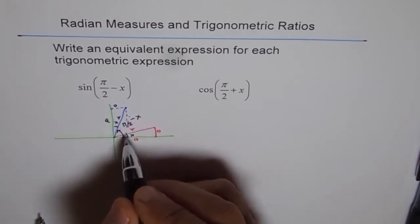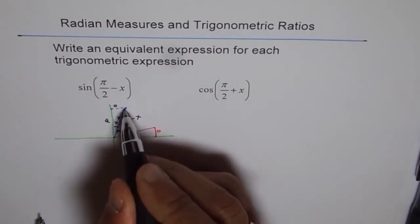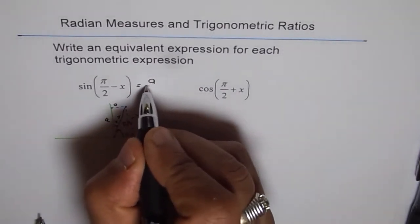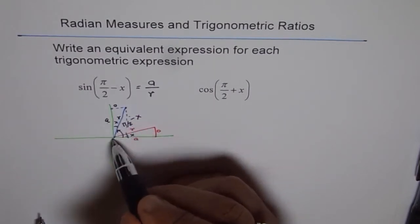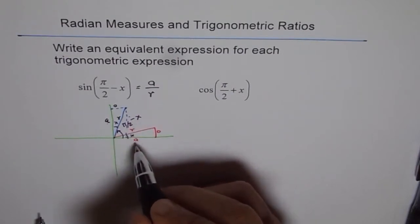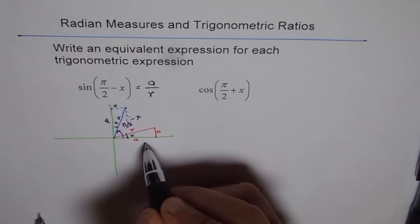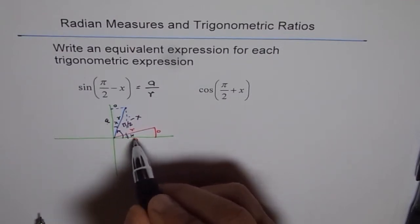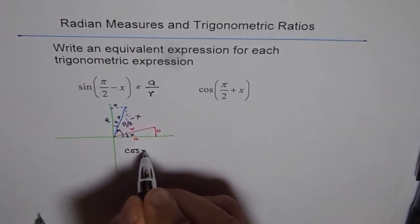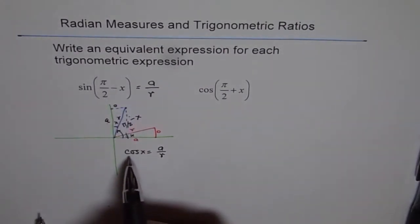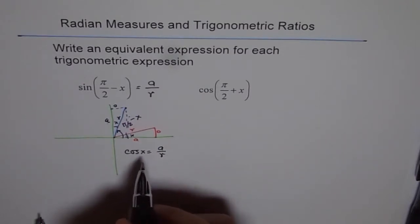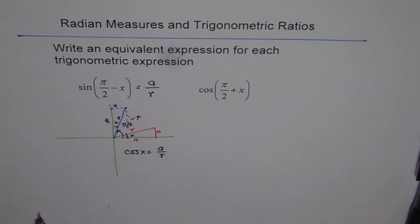What is sine π/2 minus x? Sine of π/2 minus x is this opposite side, which is equal to A, that is equal to A divided by R. But if you compare what is A over R in the original triangle where x is the angle, in that case, this is equal to cos of x. Here we see cos of x is equal to A over R and therefore, we can write that sine of π/2 minus x is equal to cos of x.